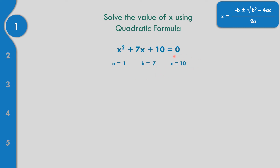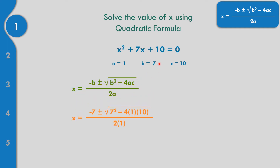The constant is equal to positive 10. Let us replace all the values of A, B, and C into the quadratic formula: negative B plus or minus the square root of B squared minus 4AC, all over 2A. The value of B is 7, so negative 7, plus or minus the square root of 7 squared minus 4 times A equals 1, times C equals 10, all over 2 times 1.